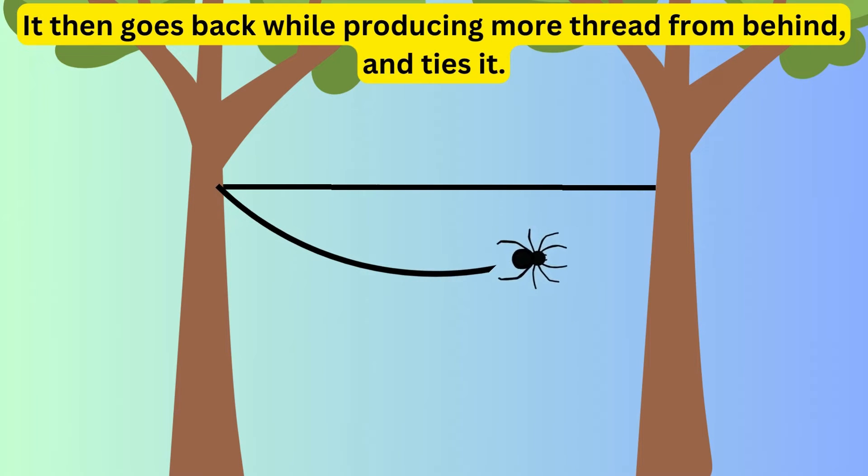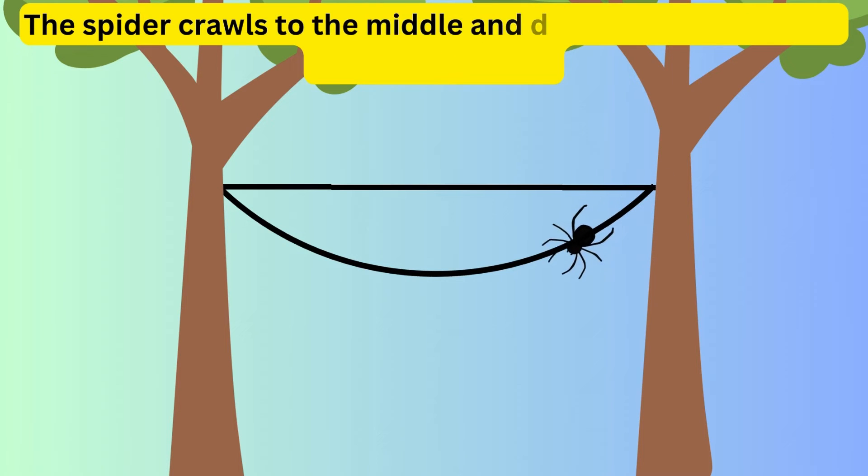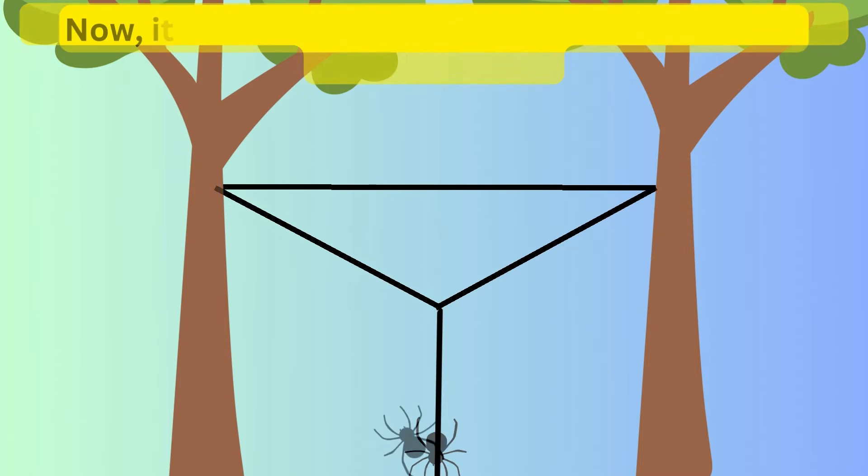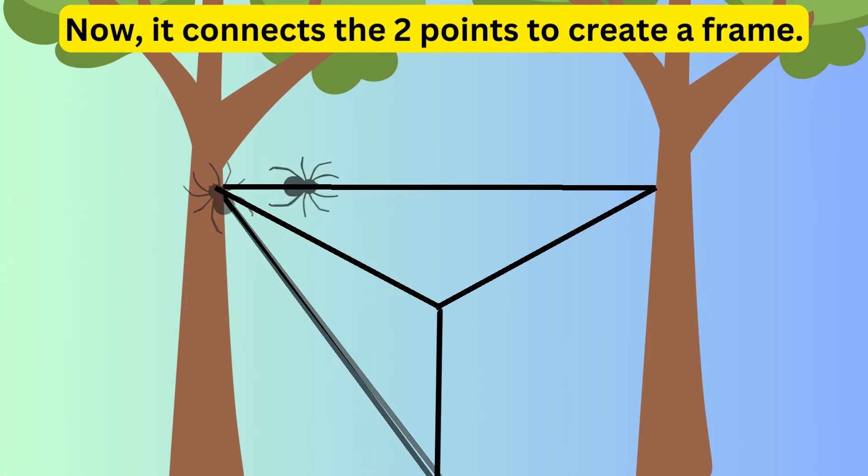It then goes back while producing more thread from behind and ties it. The spider crawls to the middle and drops down while still producing thread. Now, it connects the two points to create a frame.